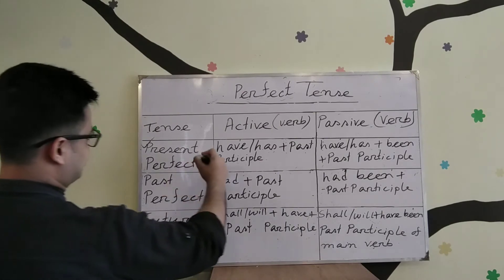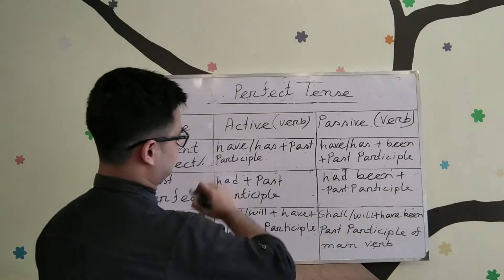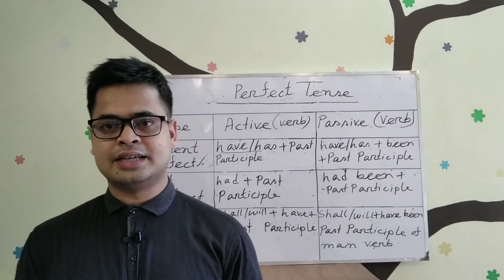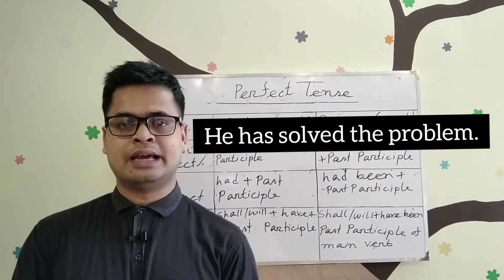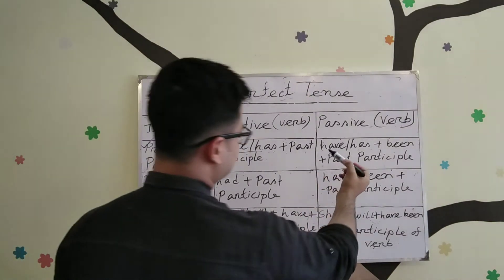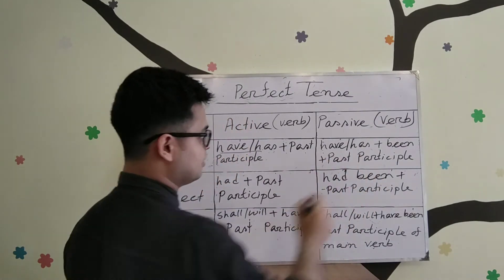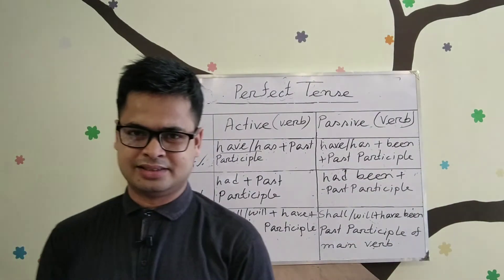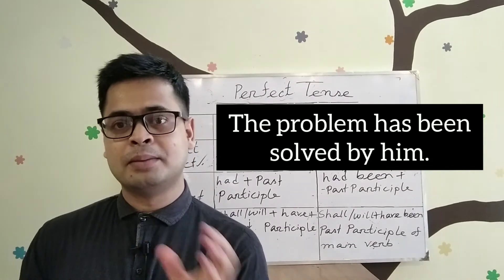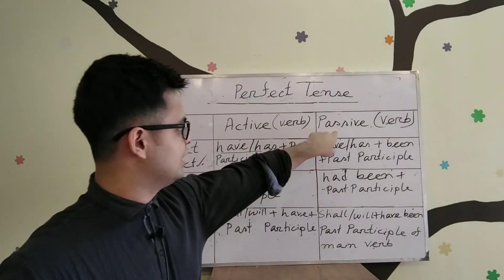Now, present perfect tense. In active voice, we use 'have/has' plus the past participle of the main verb. For example: 'He has solved the problem.' 'Has solved' is the active verb form. In passive voice, we use 'have/has' plus 'been' plus the past participle. For example: 'The problem has been solved by him.' 'Has been solved' is the passive verb form.